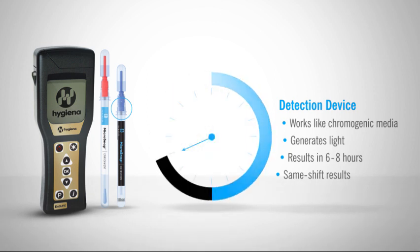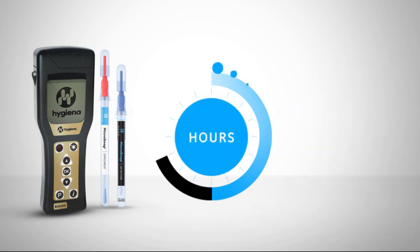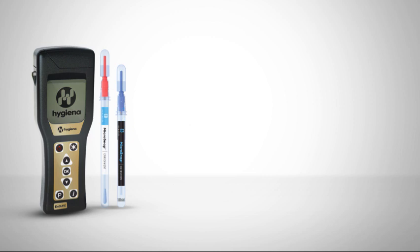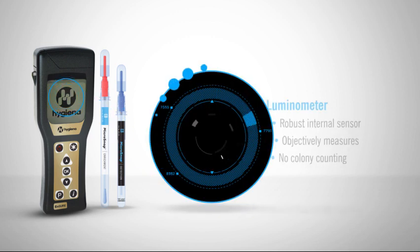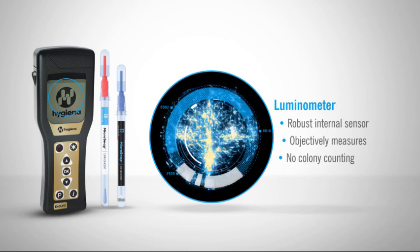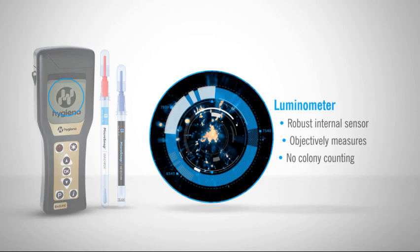Results are available in 6-8 hours and can detect down to single-figure organisms, enabling Microsnap to give same-shift results. The luminometer uses a small, yet robust internal sensor that objectively measures contamination so that you don't have to count colonies.